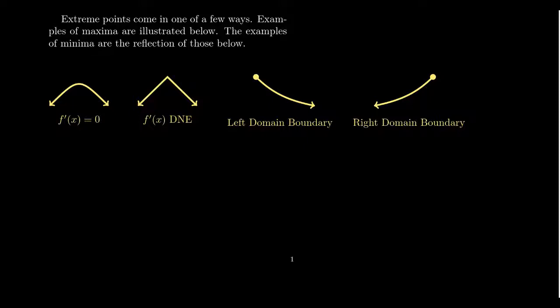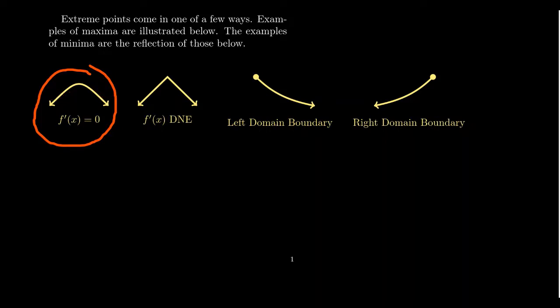Extreme points come in a few different ways. The most common case for a maximum is a graph with a nice rounded turn where the function goes from increasing on the left-hand side to decreasing on the right-hand side. At the point where it switches, there is a horizontal tangent line — perfectly flat at the top — and this happens exactly when the derivative is equal to zero.